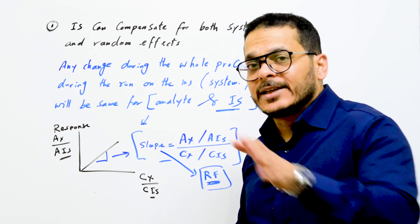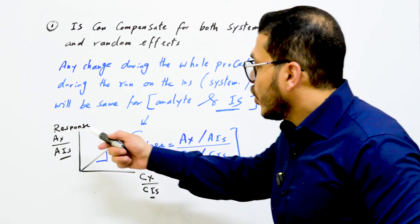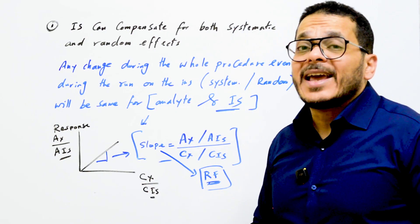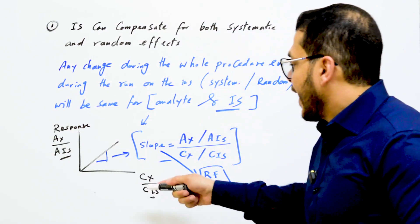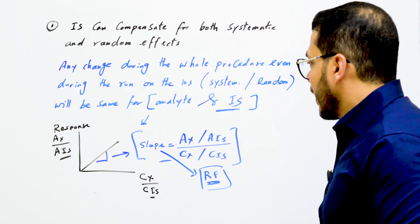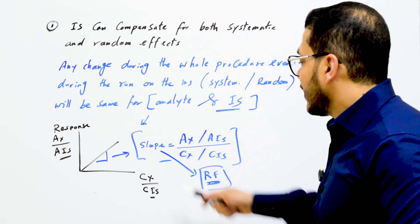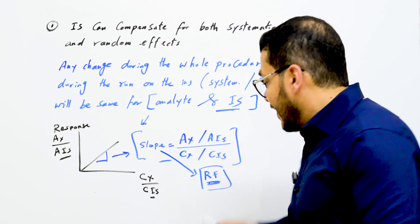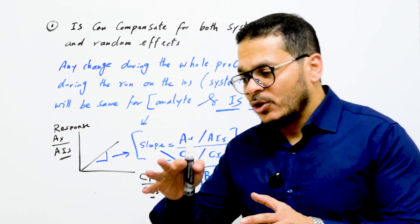The relationship between both of them will yield a constant number, as you will see from the calibration curve. In the case of using an internal standard, the response equals the area of the analyte divided by the area of the internal standard, and the concentration equals the concentration of the analyte divided by the concentration of the internal standard. The slope in this case equals this ratio, which is called the response factor.